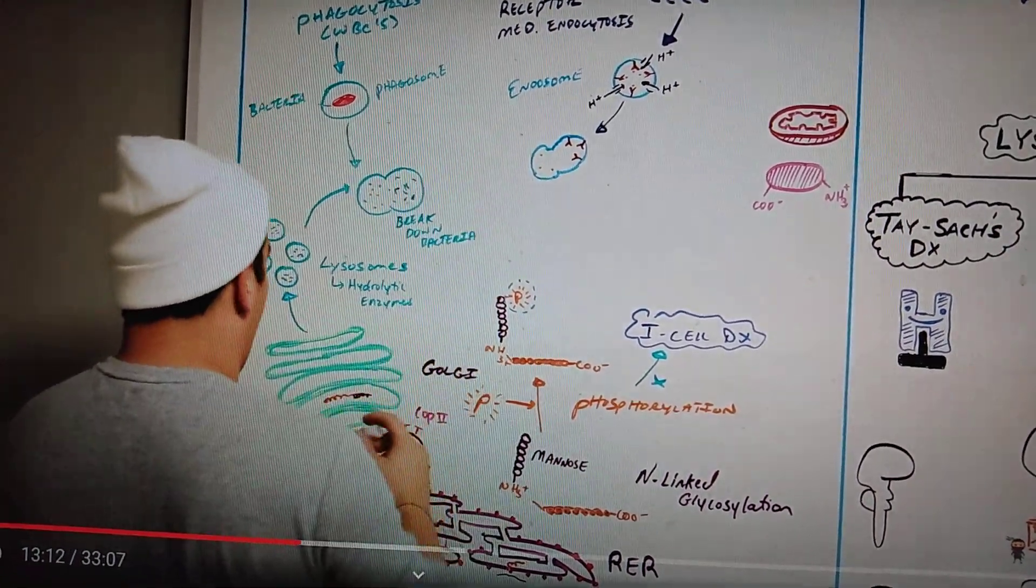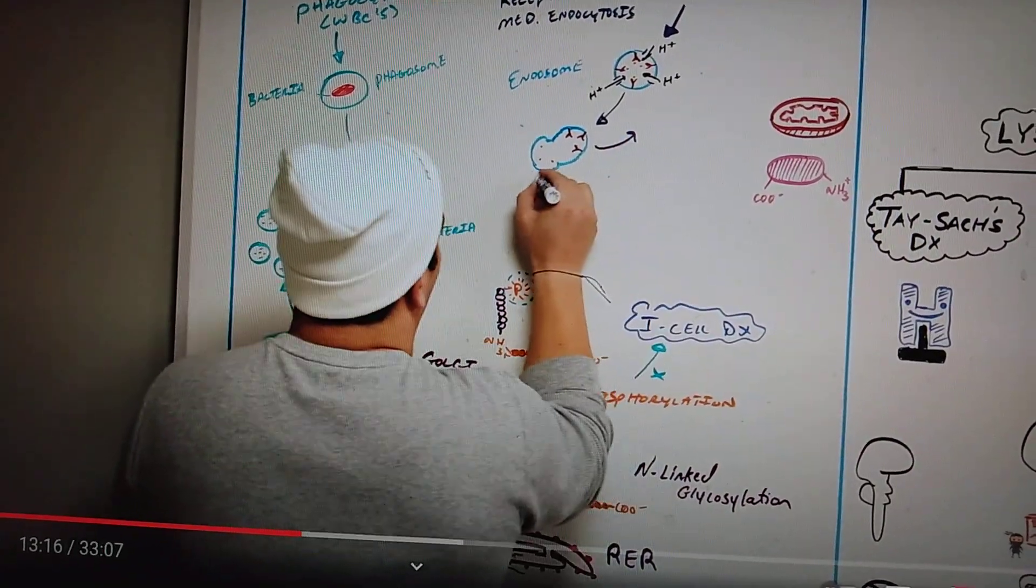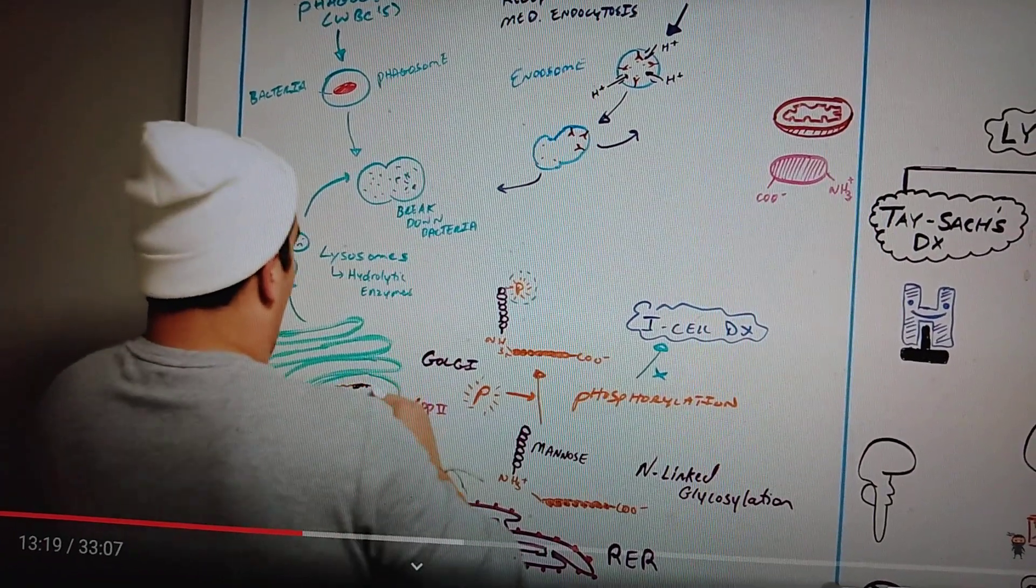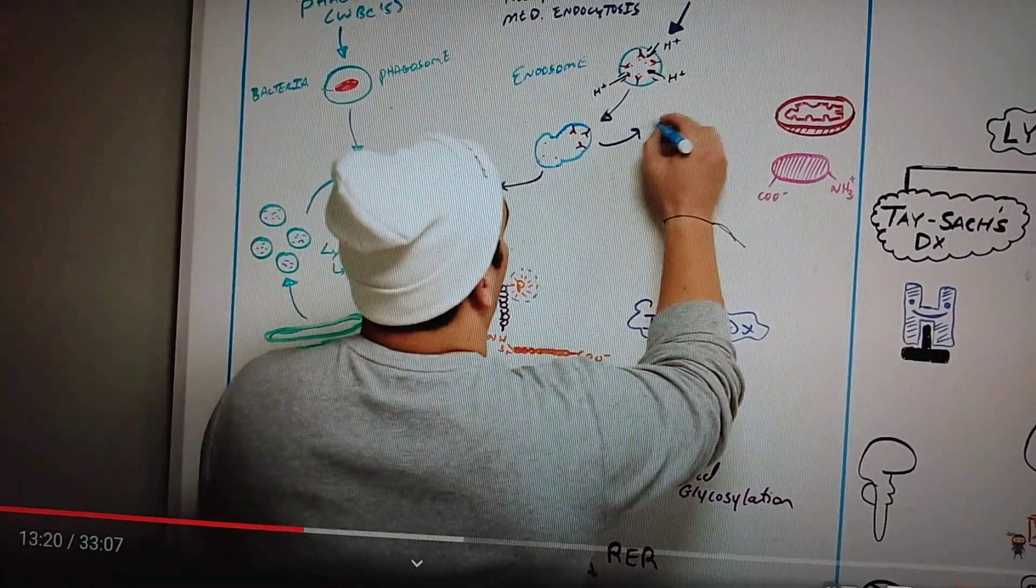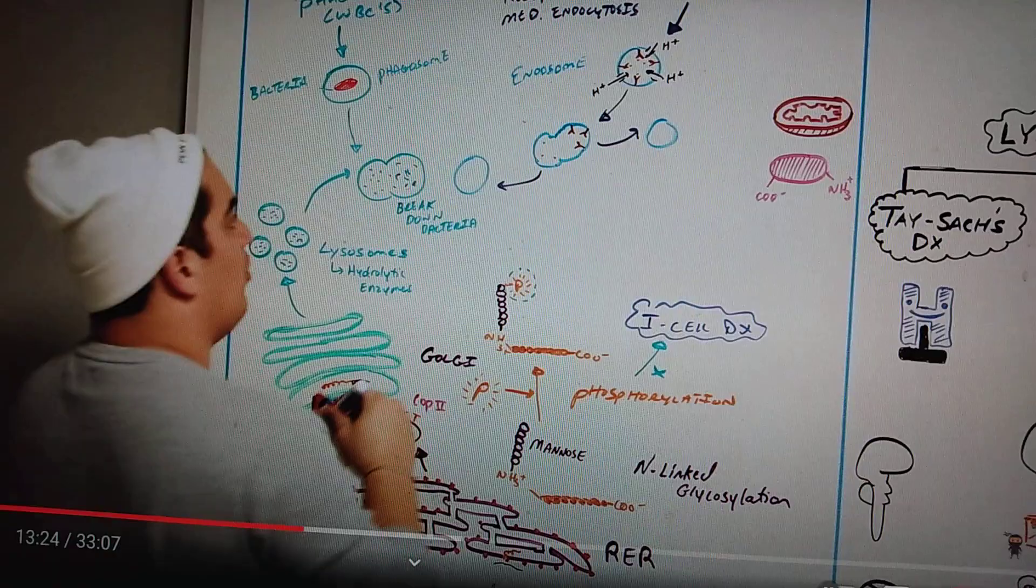Then after that process, guess what happens? We pinch this off and separate this into two separate vesicles. So now we're gonna have that and we're gonna have this. And then you're gonna have this vesicle here which contains the LDL receptors and this vesicle here which is going to contain the LDL molecules.